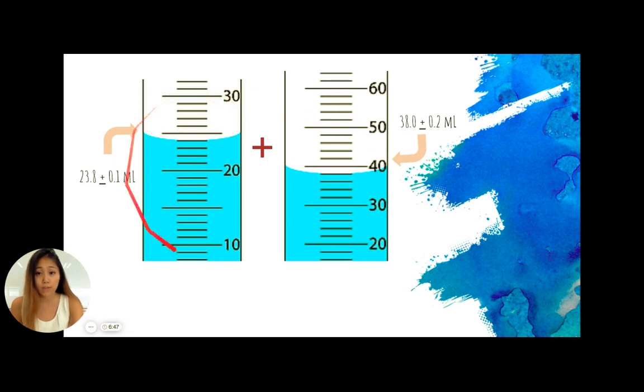So we know that compared to the first graduated cylinder, the second graduated cylinder is going to be a little bit more inaccurate because this one doesn't have as accurate of smaller indices values. So here, my uncertainty, instead of 0.1, I decided that I probably have an uncertainty of around 0.2 milliliters.